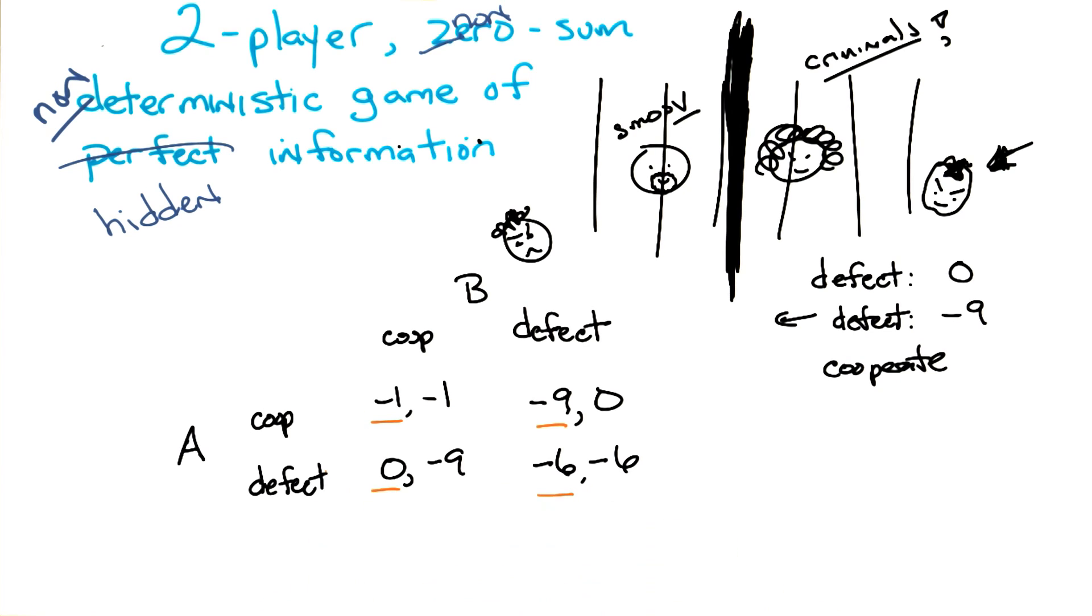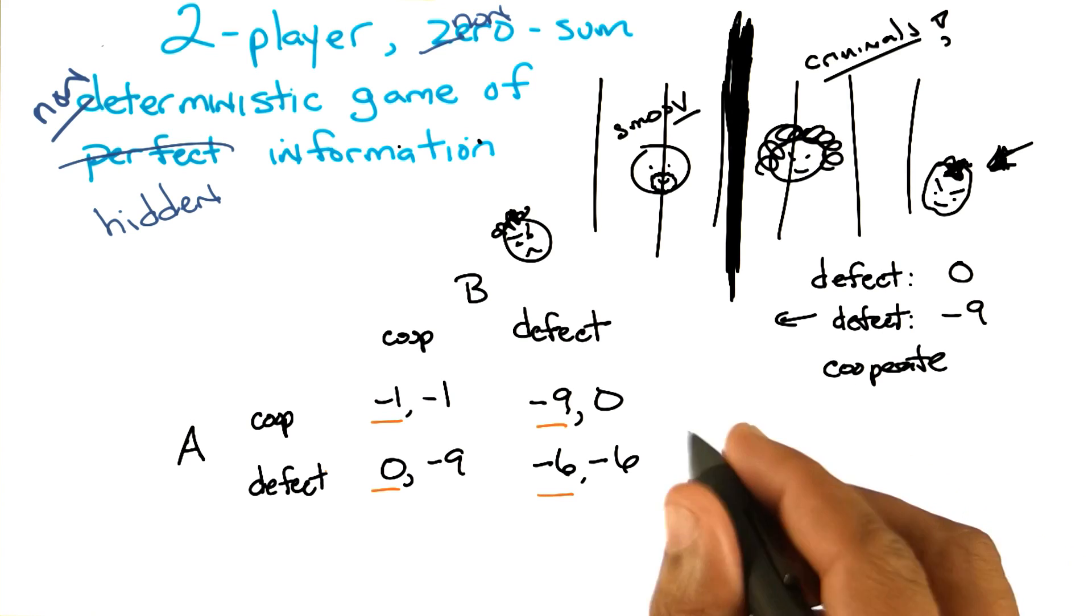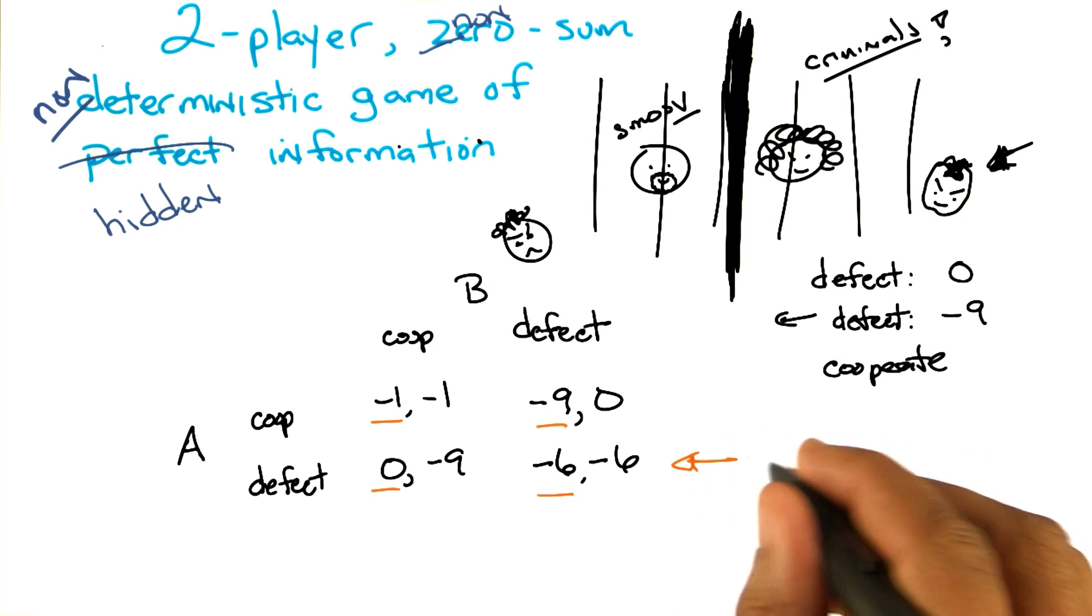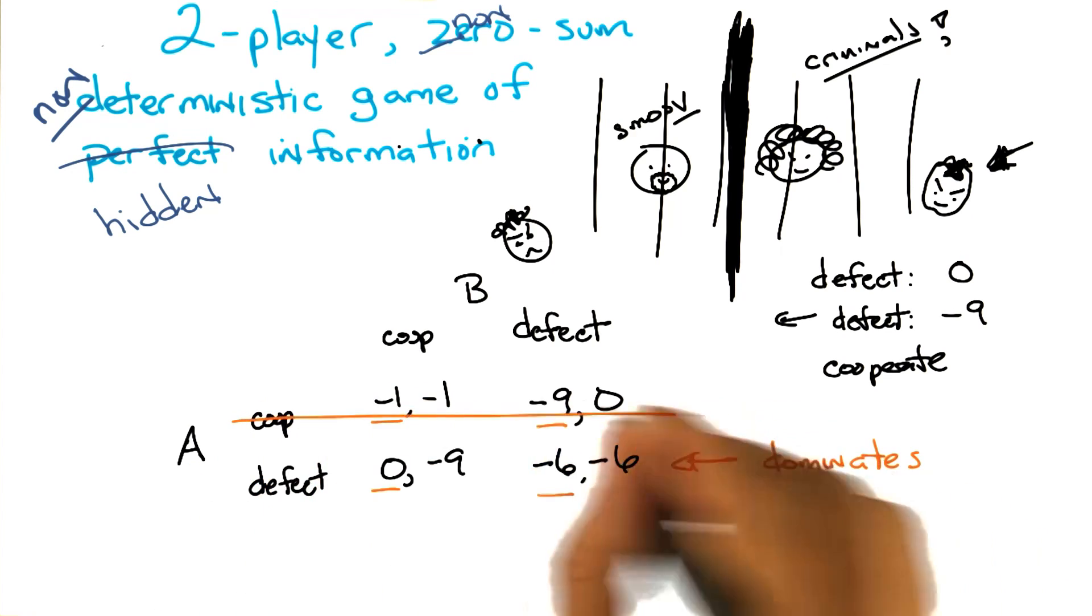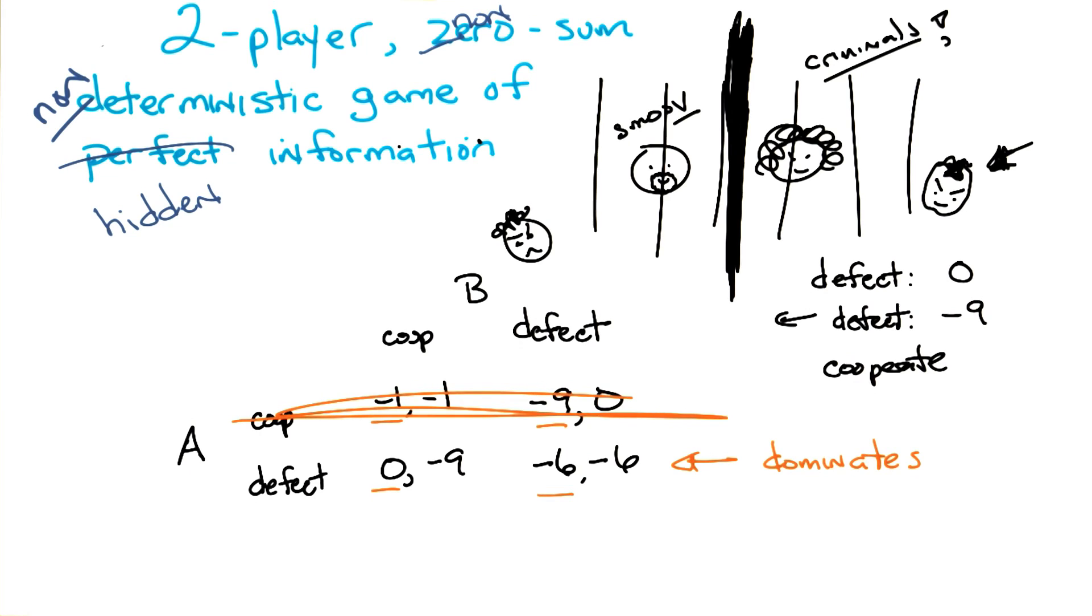In both cases, defecting is better than cooperating. So in fact, this choice, this strategy dominates the other. In other words, it is always better for me to defect than cooperate. So I will never cooperate. Ever. Because it's always better for me to defect. So I'll never cooperate ever. That'll show you.